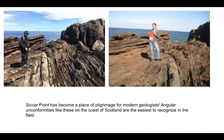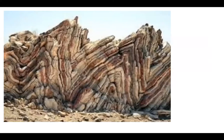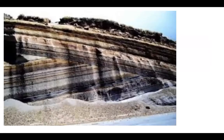Here are pictures of Siccar Point on the north coast of Scotland, the Pilgrim's Plate. Geologists from all over the world go there to see what James Hutton was thinking about. Angular unconformities are the easiest kind to recognize because they are pretty spectacular — you can see how the layers have been tilted and bent. They were horizontal, flat one on top of the other, and then tectonic forces happened.